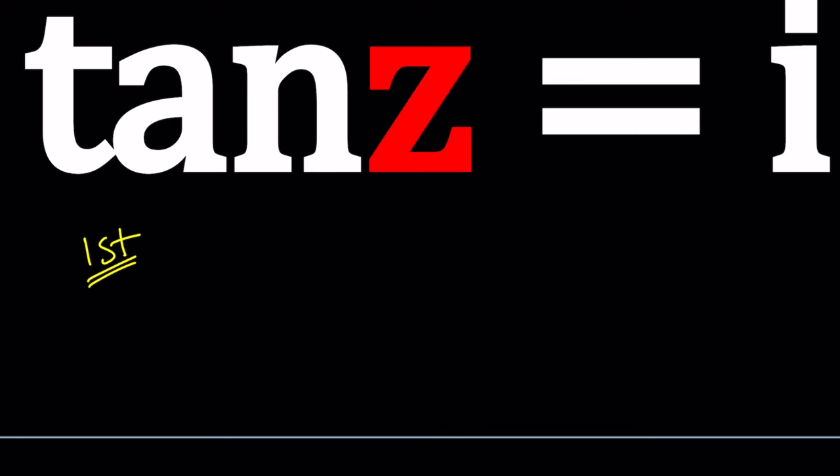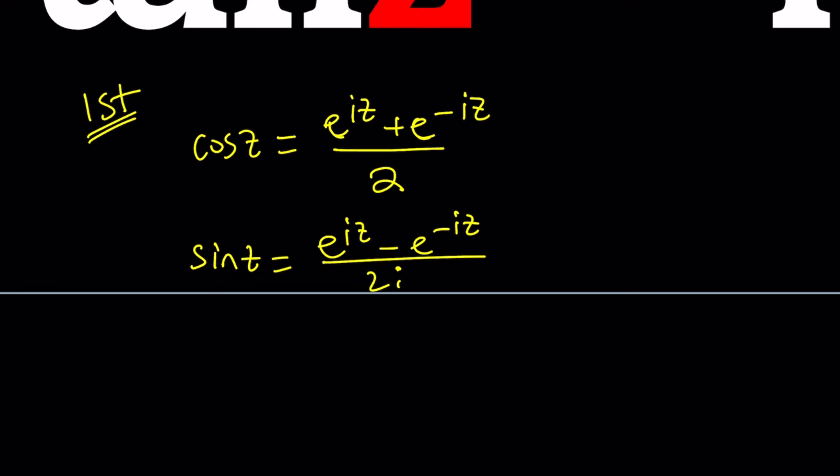From Euler's formula or the polar form, we can write cosine Z as e to the iz plus e to the negative iz divided by two, and sine Z as e to the iz minus e to the negative iz divided by two i. Just try to remember it.